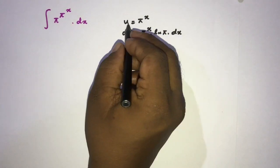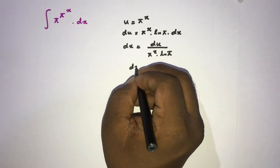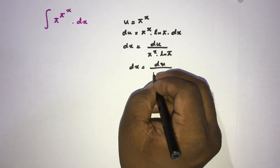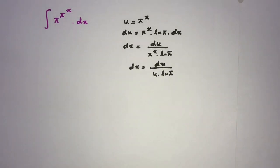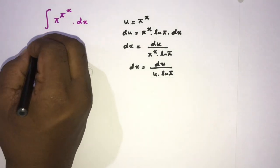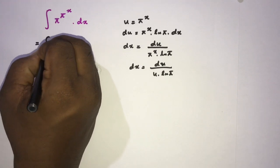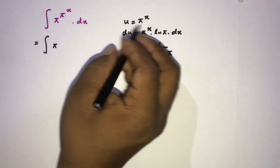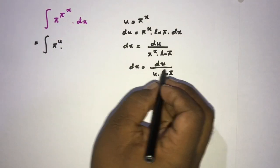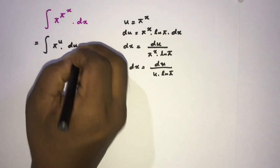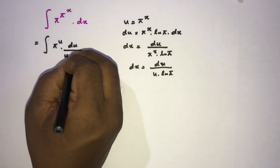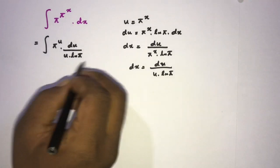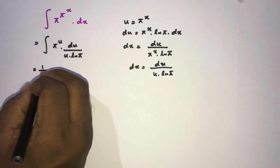Since π raised to the x equals u, dx is equal to du over u times natural log of π. Plugging in, the integral becomes: π raised to the u times du over u times natural log of π. Since 1 over natural log of π is a constant, we write it outside the integral sign: 1 over natural log of π times the integral of π raised to the u over u du.